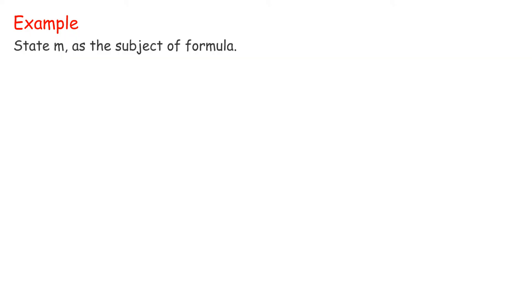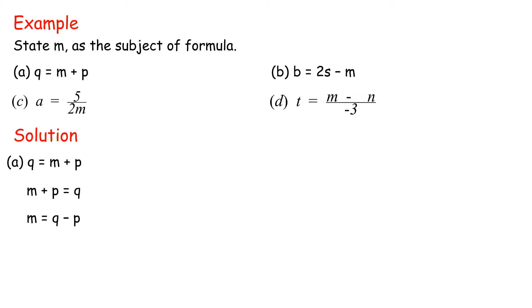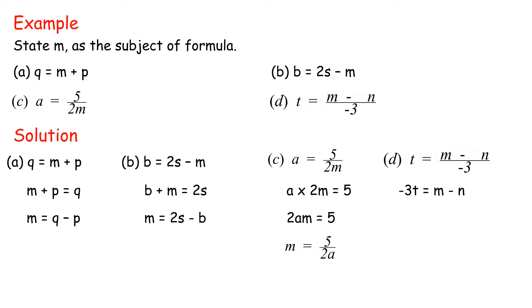Example, state m as the subject of formula. Solution. a, q equals m plus p. m plus p equals q. m equals q minus p. b, b equals 2s minus m. b plus m equals 2s. m equals 2s minus b. c, a equals 5 over 2m. a times 2m equals 5. 2am equals 5. m equals 5 over 2a. d, t equals m minus n over negative 3. negative 3t equals m minus n. m equals negative 3t plus n. m equals n minus 3t.